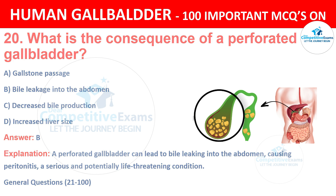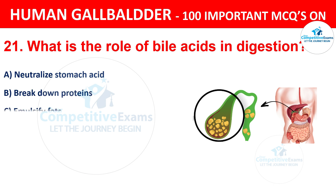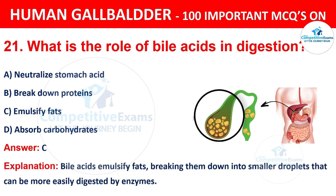Question 21: What is the role of bile acids in digestion? Options are: A) Neutralize stomach acid, B) Breakdown proteins, C) Emulsify fats, D) Absorb carbohydrates. The correct answer is C, emulsify fats. Bile acids emulsify fats, breaking them down into smaller droplets that can be more easily digested by enzymes.